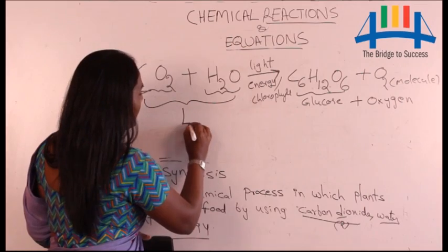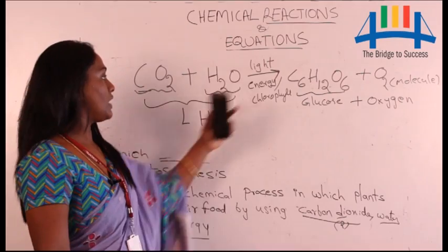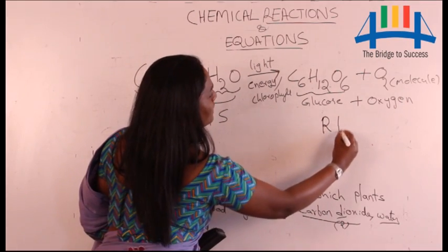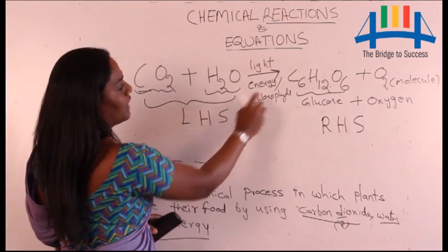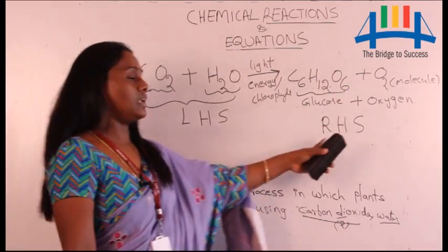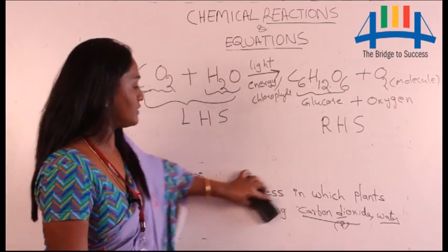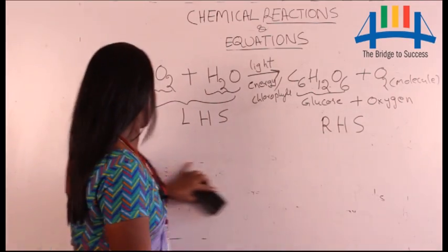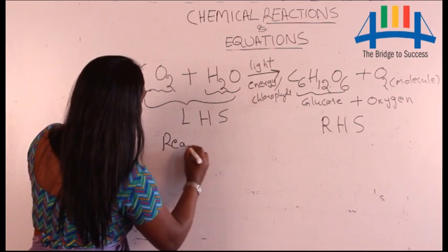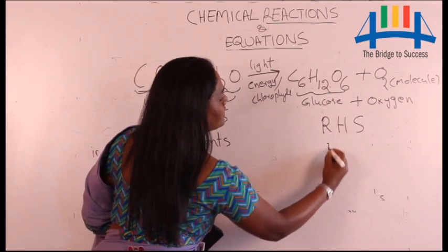The left side of the arrow is called LHS — left hand side — and the right side is called RHS — right hand side. The left hand side indicates reactants, and the right hand side indicates products.